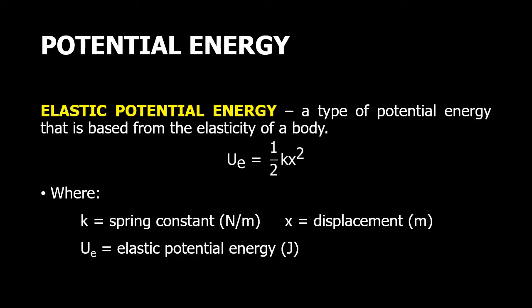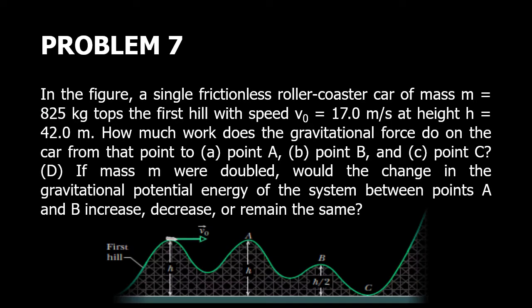Another type of potential energy is the elastic potential energy. Examples of elastic materials are springs, rubber bands, and more. So in order to solve for the elastic potential energy, we will use the formula U_e = (1/2)kx^2, where k is the spring constant in newtons per meter, x is displacement in meters, and U_e is the elastic potential energy in joules.